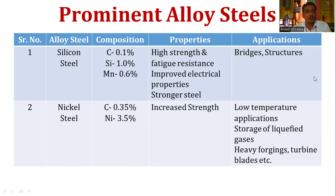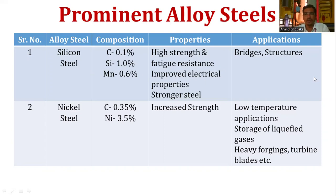The first alloy steel is silicon steel. Its composition is 0.1 percent carbon, 1 percent silicon, and 0.6 percent manganese. The properties of silicon steel are high strength and fatigue resistance, improved electrical properties, and it is a stronger steel.